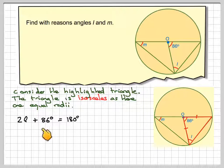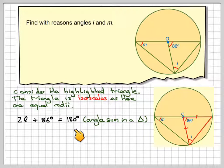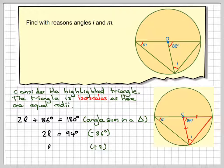So I can write down that 2L plus 86 is equal to 180 because it's the angle sum of the triangle. Take 86 from both sides. We get that 2L is equal to 94 and divide by 2, we get that L is 47 degrees.